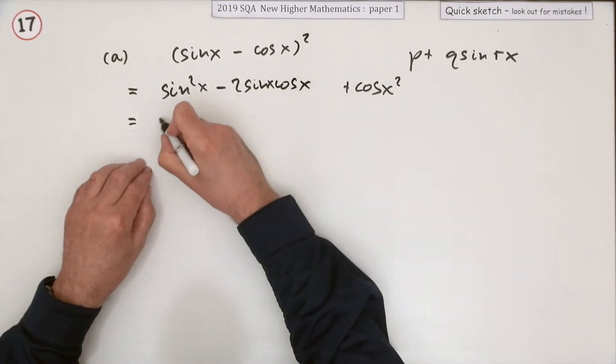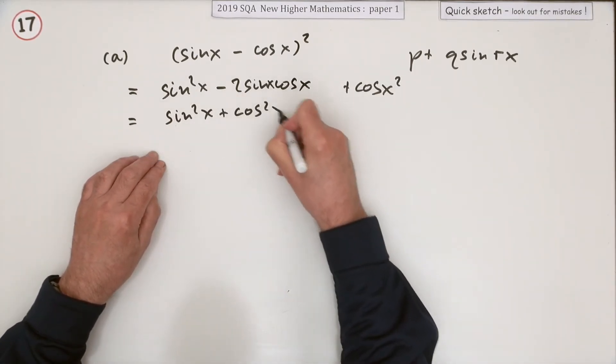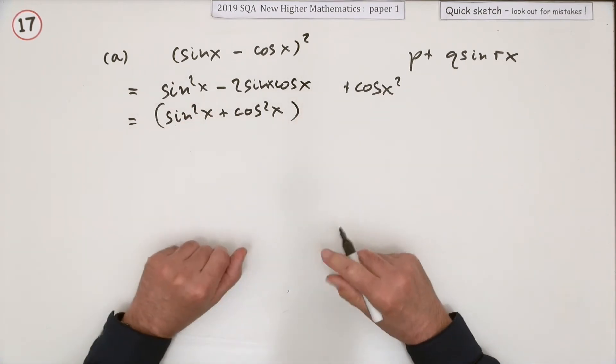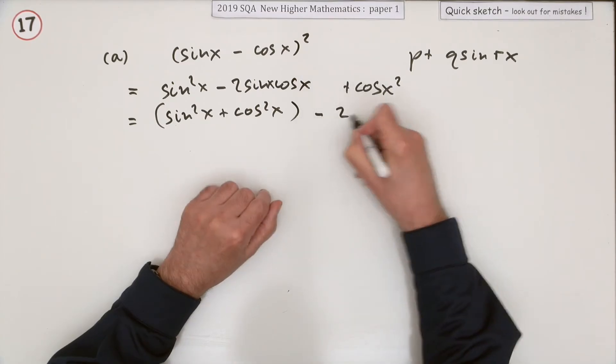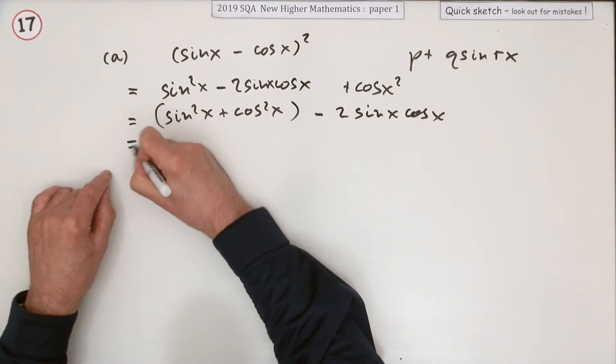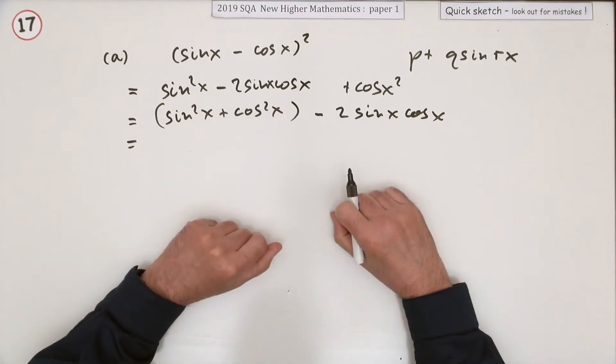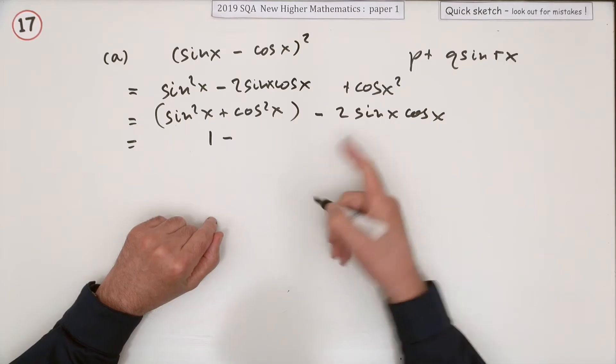I'll just show it by bringing the parts together. If you bring the cos²x over to join the sin²x and put them in brackets, then you've got minus the 2sin x cos x. These are two expressions you should recognize: sin²x and cos²x equals one for anything, and...